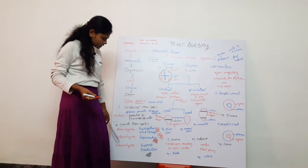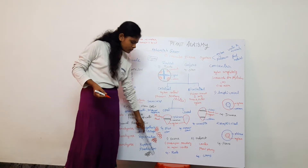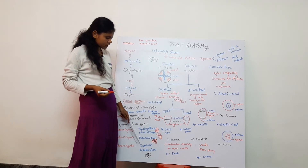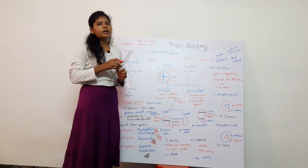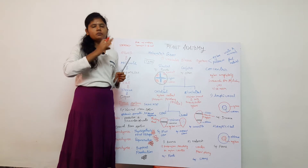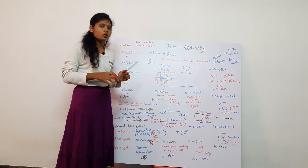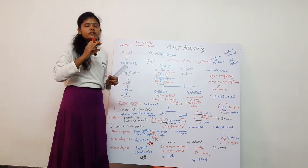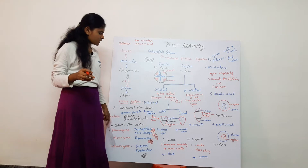The third type is sclerenchyma. The structure of sclerenchyma is polygonal in shape. Its function is support and protection of the plant. Most plants are stable because of sclerenchyma cells.